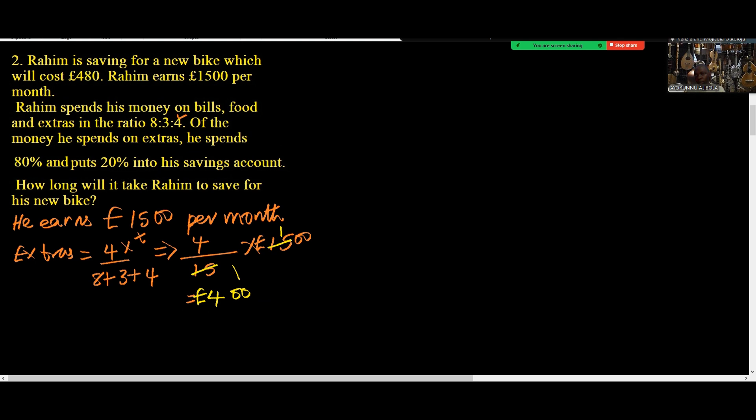From the extras he saves 20%. Let's find 20% of the extras. So 20% of £400, that's going to be 20 over 100 times 400.